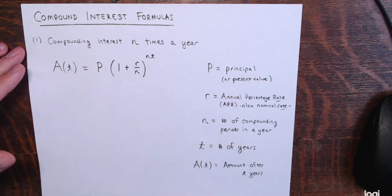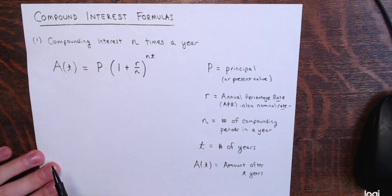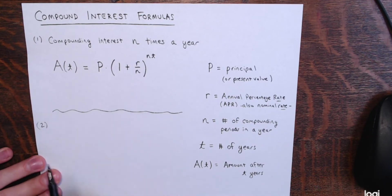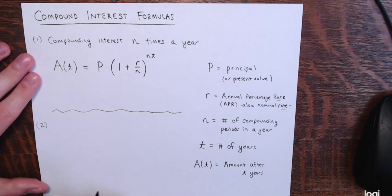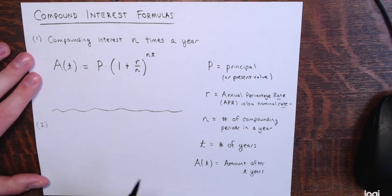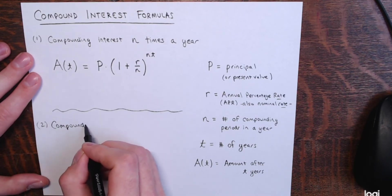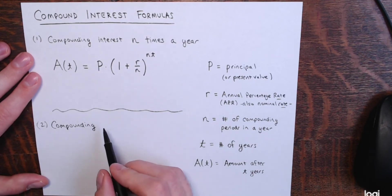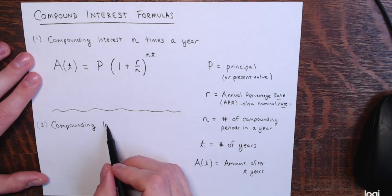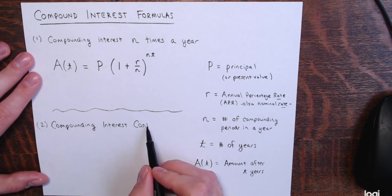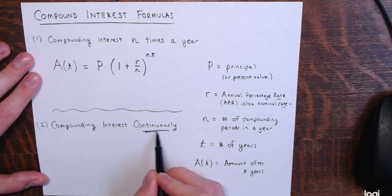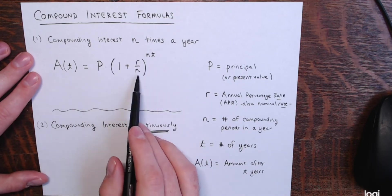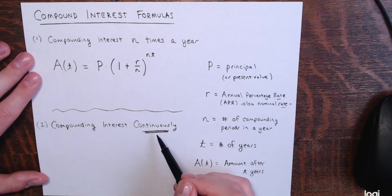That's the first formula — for compounding interest a finite number of times in a year. The second compound interest formula is for when you're compounding interest continuously — interest being added at every instant, an infinite number of times throughout the year. There's a totally different formula for this because n is going to infinity — you can't plug in infinity, so you have a formula for compounding continuously that doesn't involve n.